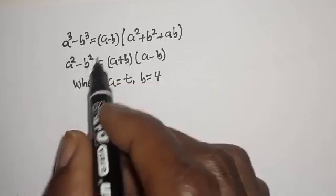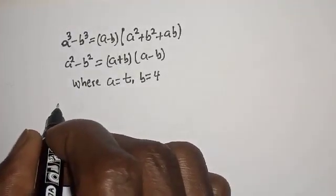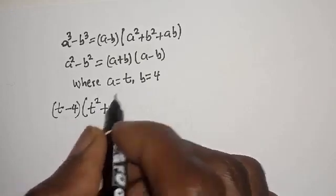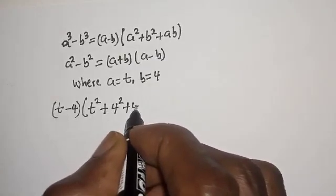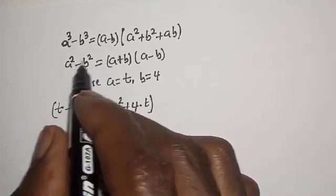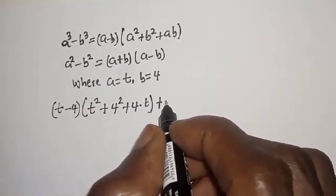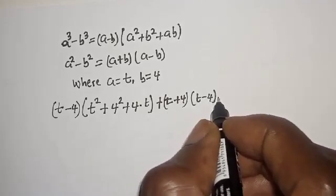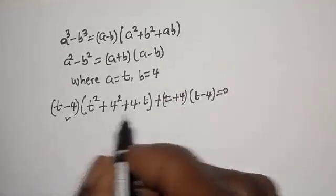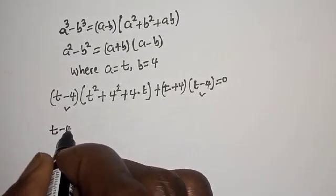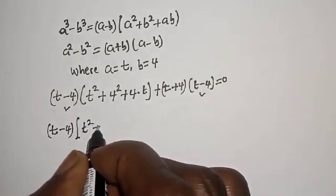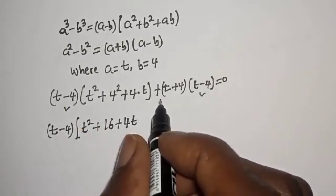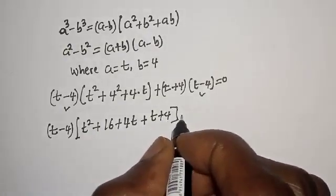Applying these: a cubed minus b cubed gives t minus 4, multiplied by t squared plus 16 plus 4t. Then for the a squared minus b squared part, we get t plus 4, multiplied by t minus 4, equal to zero. Now t minus 4 is common, so we factor it out: t minus 4, multiplied by t squared plus 16 plus 4t, plus t plus 4, equals zero.